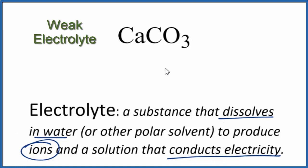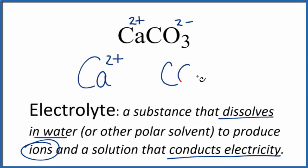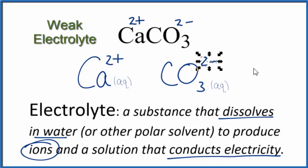It'll be very weak. So we say calcium carbonate is a weak electrolyte. The ions that dissolve — calcium always forms 2+ ions, and the carbonate ion as a whole is 2−. So we will get Ca2+ and we will get carbonate ions forming, but not many. Those would be aqueous since they're dissolved in water. So in answer to our question, calcium carbonate, CaCO3, is a weak electrolyte.